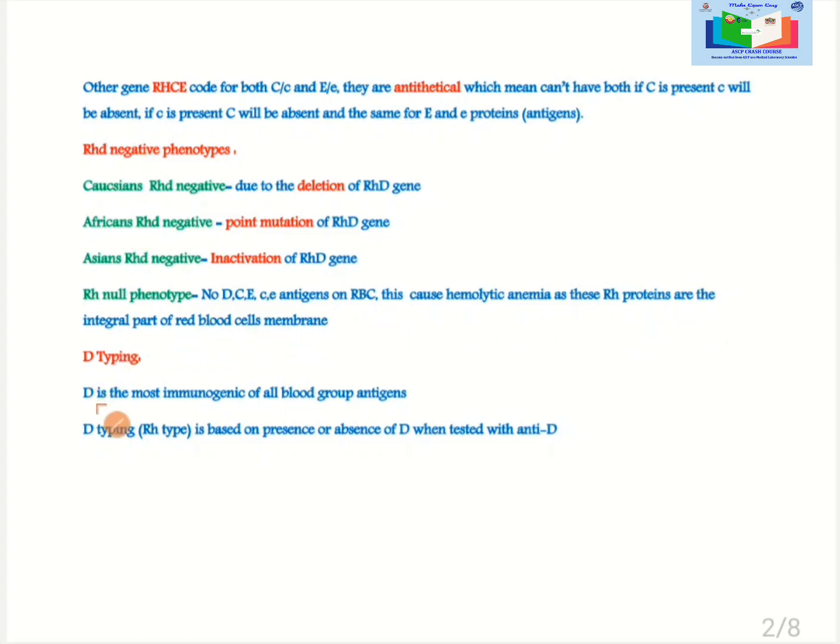D Typing: D is the most immunogenic of all blood group systems. D Typing is based on presence or absence of D antigen when tested with anti-D.